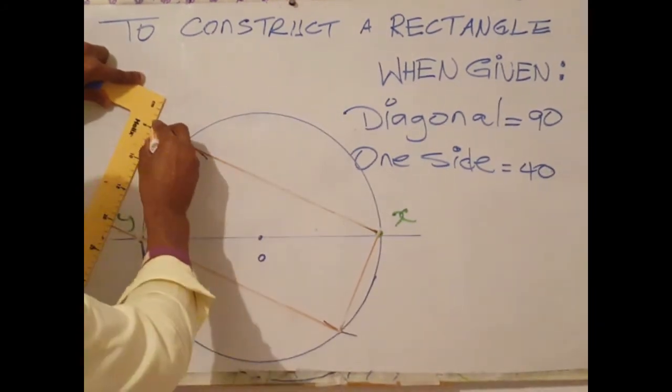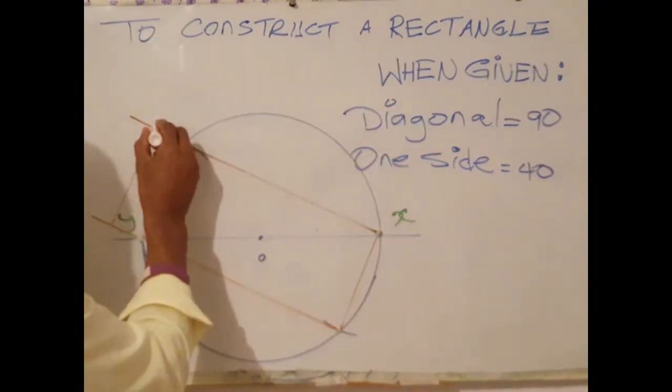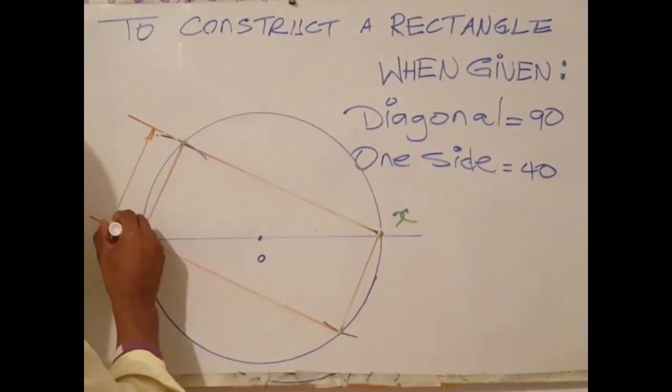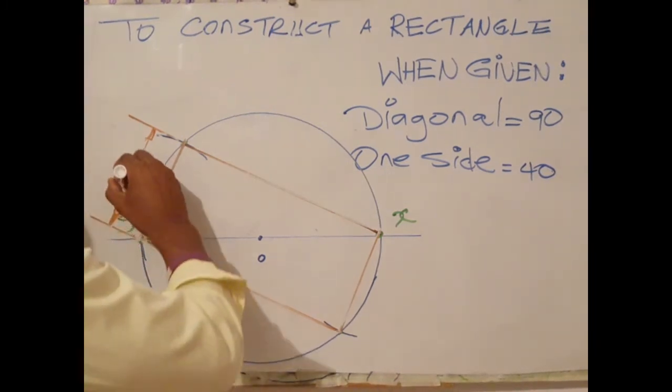Using the long stroke as center. This is 40.